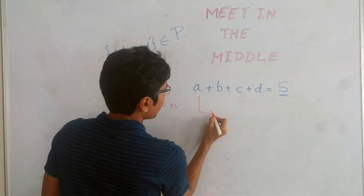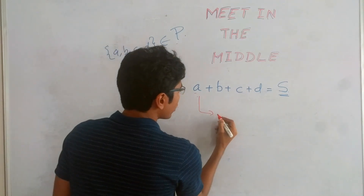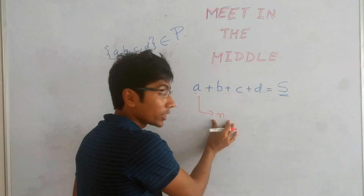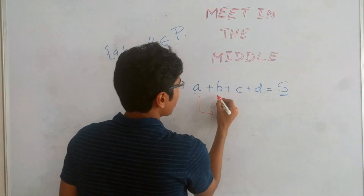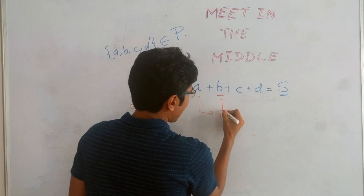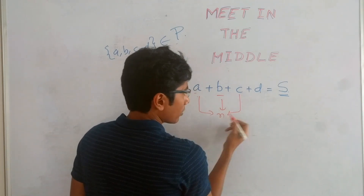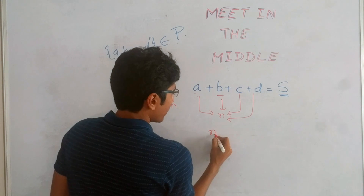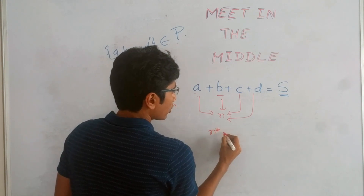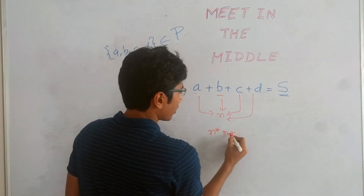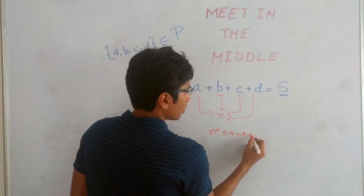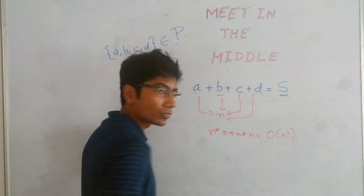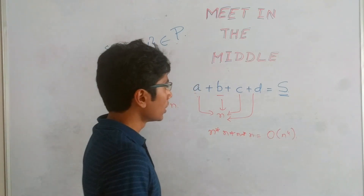To find A we need N operations. For each of those, we need to find a particular B which takes N more operations, another C takes N more, and D takes N more. So this is going to be N × N × N × N, which is order N raised to the power 4.